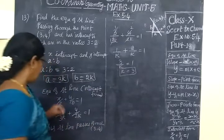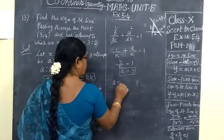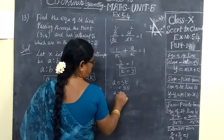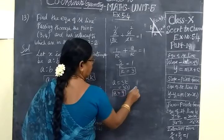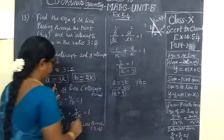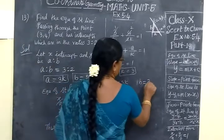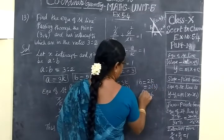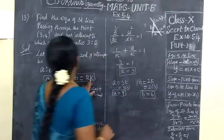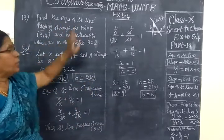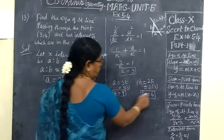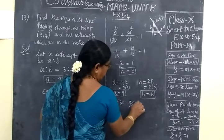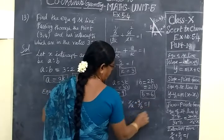Now you substitute the K value. A equals 3K, so 3 times 3, A equals 9. After that B equals 2K, so 2 times 3, B equals 6. Now we have to find the equation of the straight line. X intercept and Y intercept. Equation of the line is X by A plus Y by B equals 1. So X by 9 plus Y by 6 equals 1.